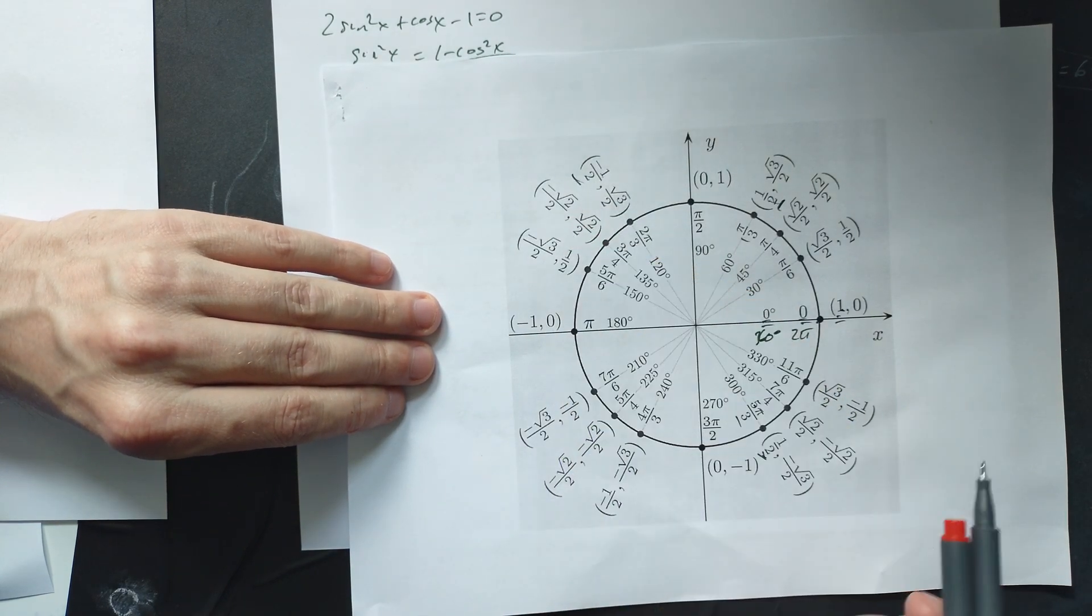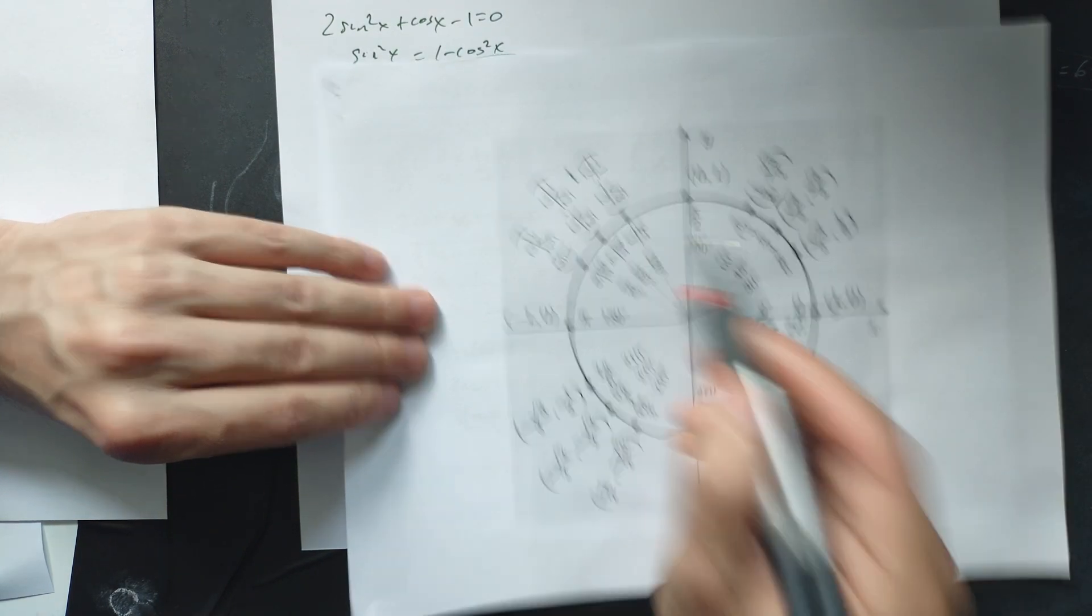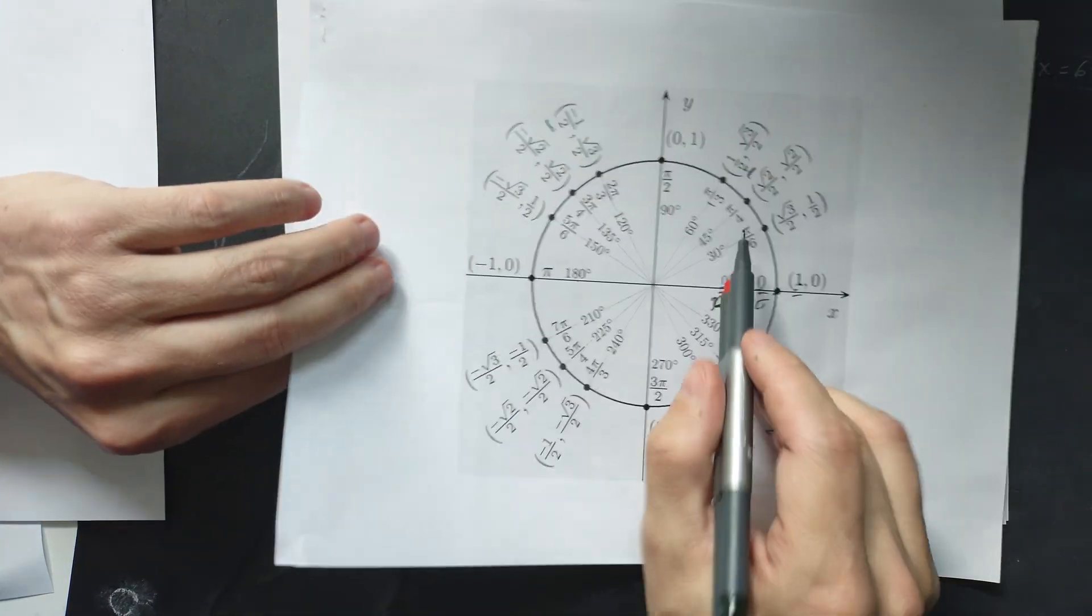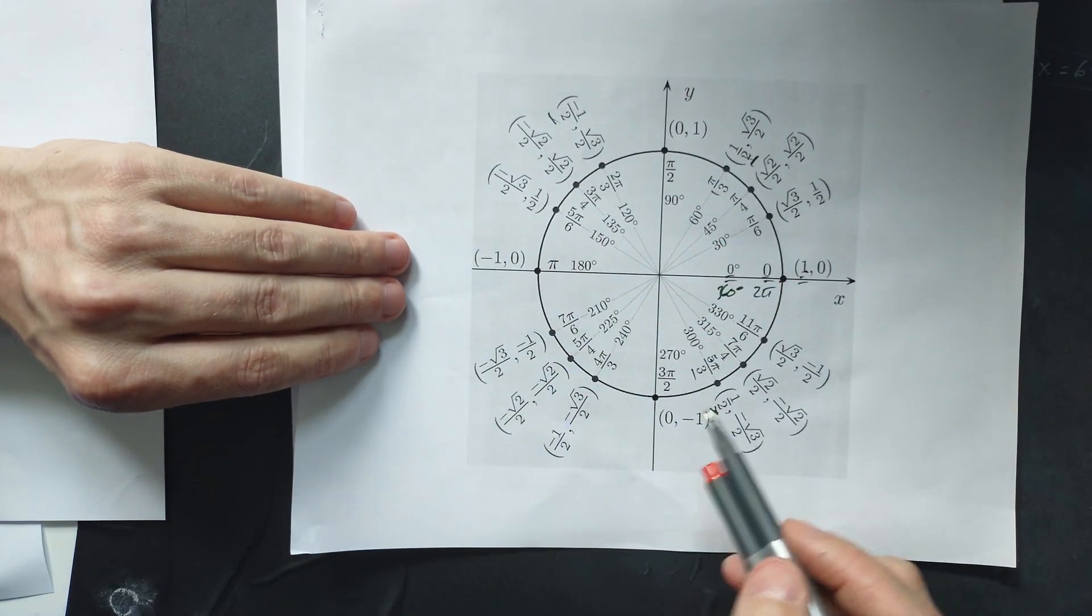So the x coordinate right here is negative 1 half at 2 pi over 3. So you write that down. 2 pi over 3. Where else is it equal to negative 1 half? The x coordinate.